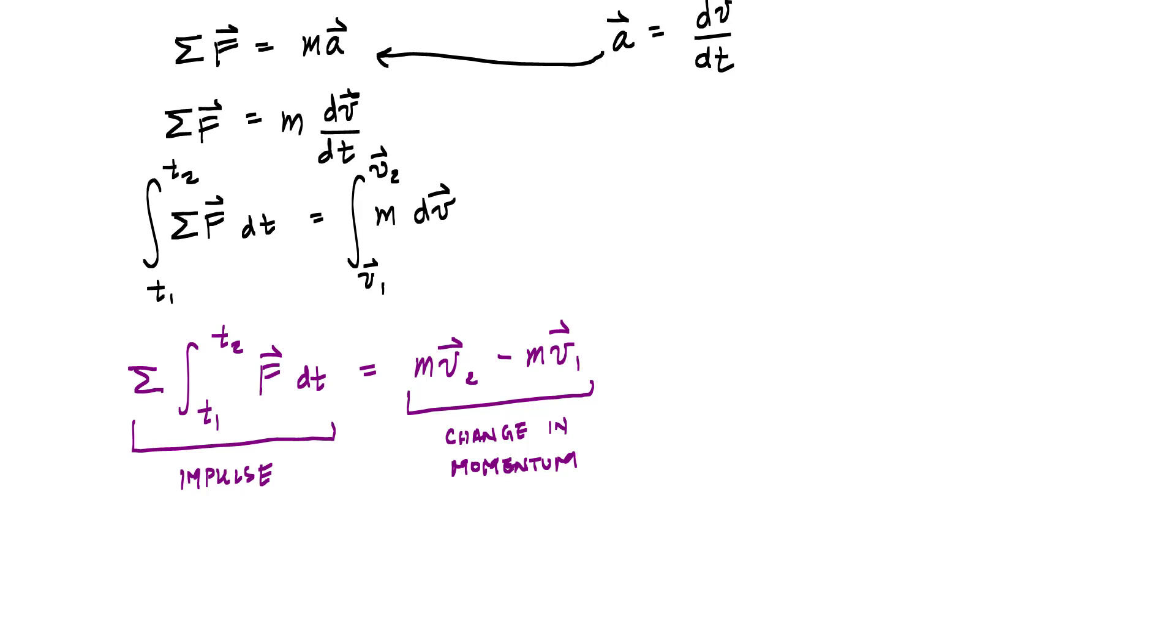I could even rewrite this another way as the principle of linear impulse and momentum. And if I take this mv1 plus the sum of all the impulses from t1 to t2 is equal to mv2 like this. And notice these are all vector quantities.